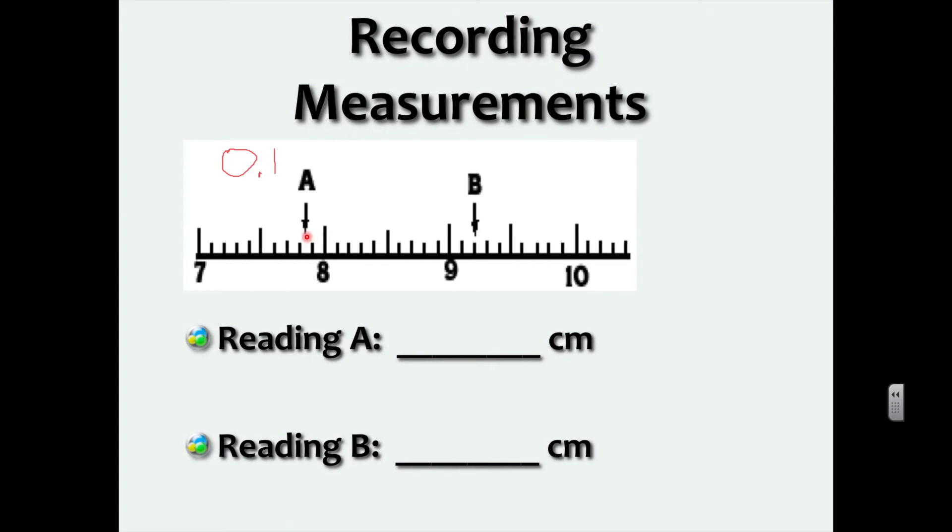Now I need to be able to communicate that to the reader that it's somewhere between that. So I'm going to estimate one extra digit. So that means I'm going to write down 7.85. What you are doing is you are taking that smallest amount of increment here, and the smallest increment has one decimal place, so you should be adding one extra decimal place. So if the smallest increment is two decimal places, you will add another decimal place, and your reading will actually have three decimal places. Hopefully that makes sense.